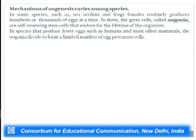The mechanism of oogenesis varies among species. In some species such as sea urchins and frogs, females routinely produce hundreds or thousands of eggs at a time; their oogonia are self-renewing stem cells that endure for the lifetime of the organism. In species that produce fewer eggs, such as humans and most other mammals, the oogonia divide to form only a limited number of egg precursor cells. Before discussing human oogenesis, we will first look at the maturation of oocytes in frogs.